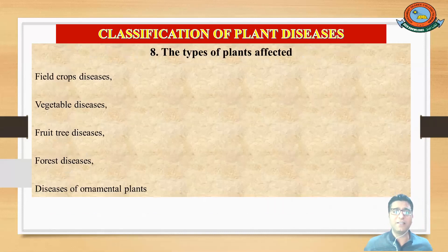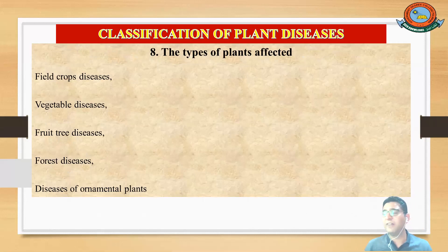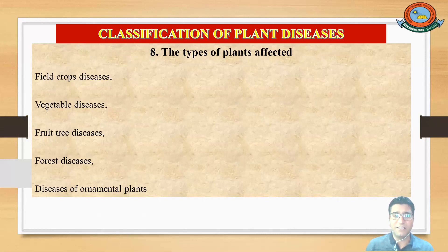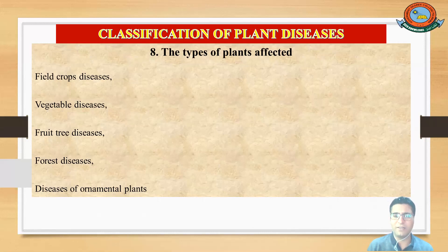One more classification is dependent on the type of plants affected. For example, field crops give us field crop diseases; second is vegetable disease, where vegetables are affected; third is fruit tree disease, where fruit trees such as apples are affected; fourth is forest disease, occurring in forest plants; and the last is disease of ornamental plants, where ornamentals used for decoration are affected. This is the classification based on the types of plants which are affected during a disease.